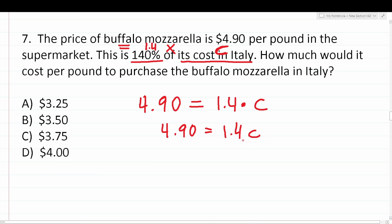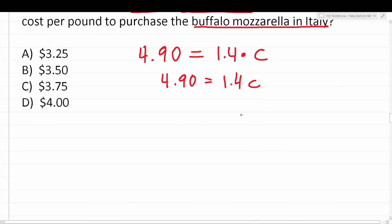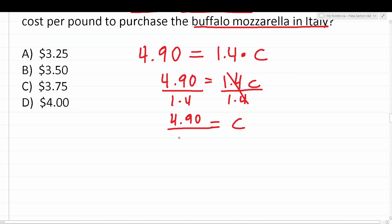We're going to be solving for the letter variable C, which refers to the cost of buffalo mozzarella in Italy. This is a one-step equation. Let's get C by itself by dividing both sides by 1.4. This crosses out on the right side, leaving just C. On the left side we have 4.90 divided by 1.4, or equivalently C equals 4.90 over 1.4.